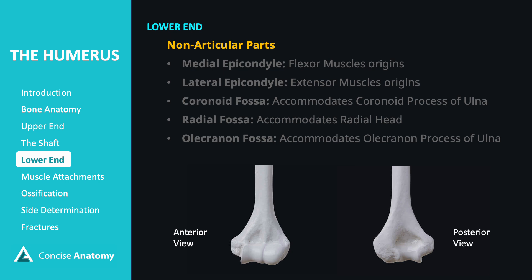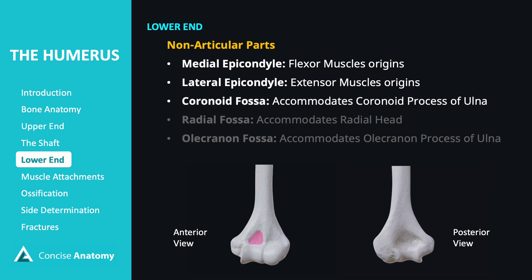The non-articular parts of the lower humerus include the medial epicondyle, which provides origin for flexor muscles, and the lateral epicondyle, which provides origin for extensor muscles. The coronoid fossa accommodates the coronoid process of the ulna during elbow flexion. Similarly, the radial fossa provides space for the radial head when the elbow is flexed. On the posterior aspect, the olecranon fossa allows the olecranon process of the ulna to fit during elbow extension.